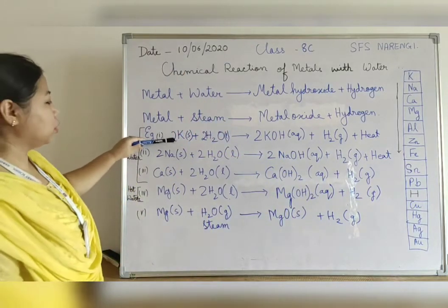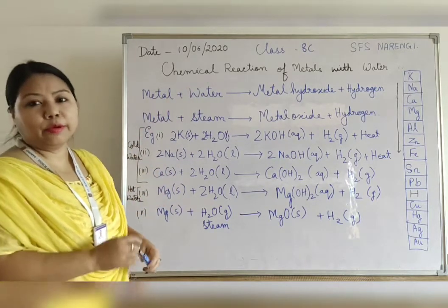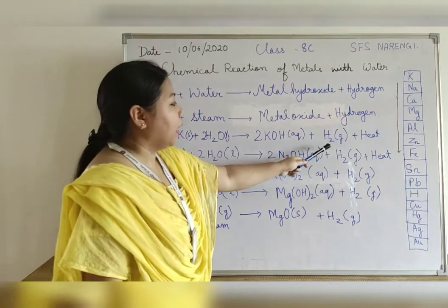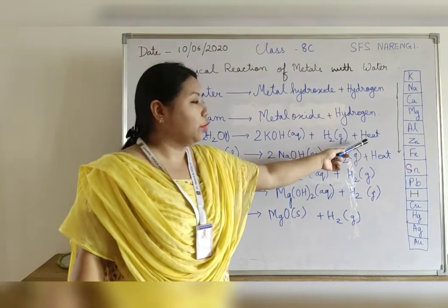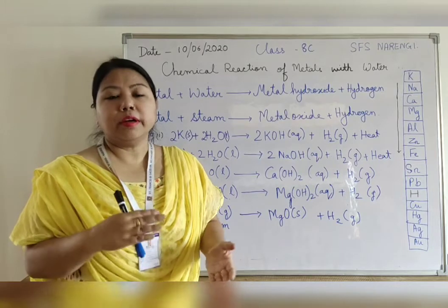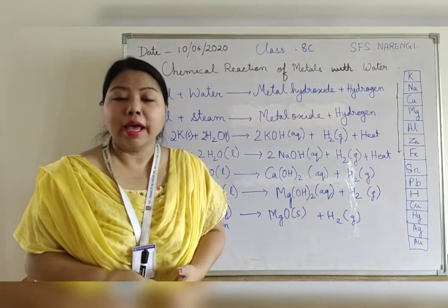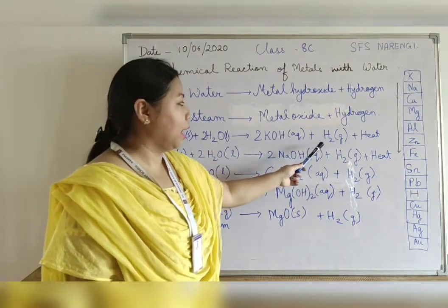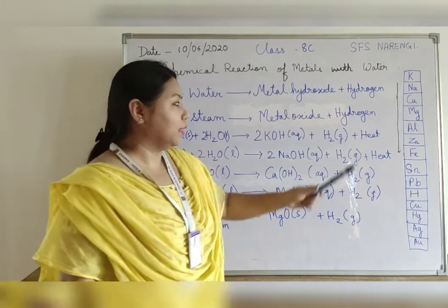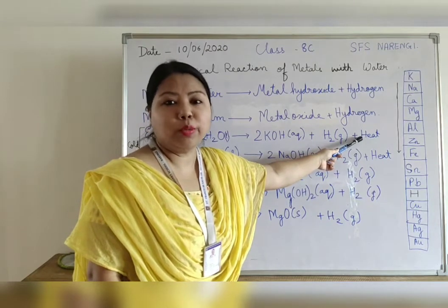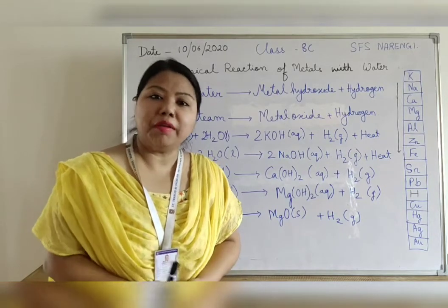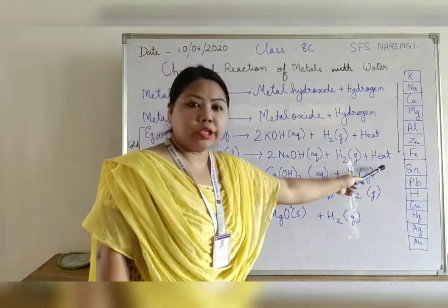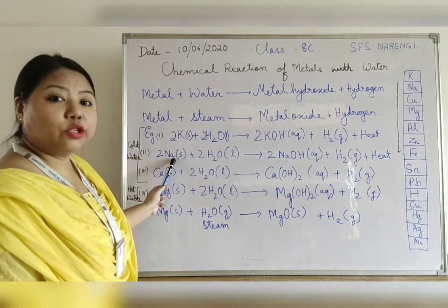Let us understand the reaction of metals with water by taking some examples. Starting with potassium and sodium, since they are the most reactive metals in the reactivity series. When potassium reacts with water it produces potassium hydroxide and hydrogen, along with a lot of heat. Reactions in which heat is produced are called exothermic reactions. The hydrogen immediately burns because of the large amount of heat released, making the reaction very vigorous. Similarly, sodium also reacts with water to produce sodium hydroxide, hydrogen and a lot of heat.